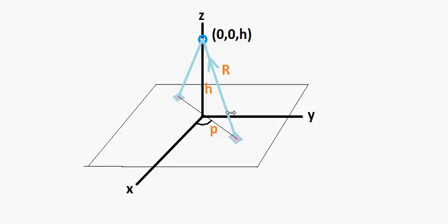So what's R going to be? It's going to be this vector right here. What coordinates does that have in the polar coordinate system? Well, it's going to have a Z component of H.